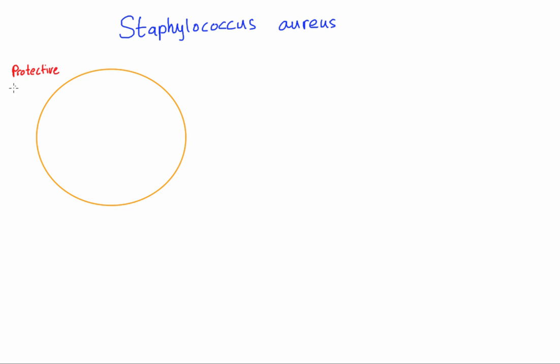Three important protective proteins: the first is called Protein A. Protein A binds IgG antibodies at the Fc portion, essentially flipping them around so the antibodies can't bind to the Staph aureus. This prevents opsonization and phagocytosis.